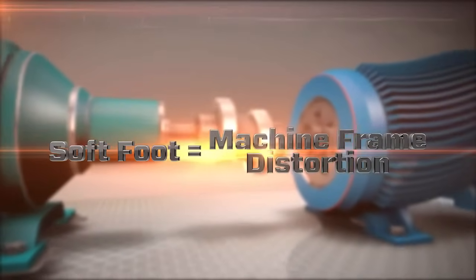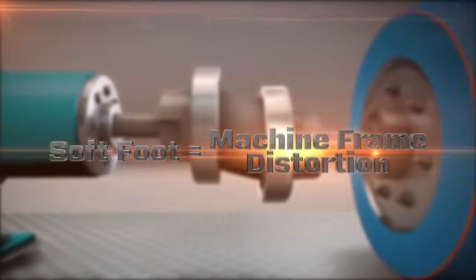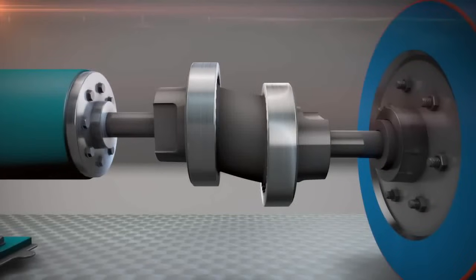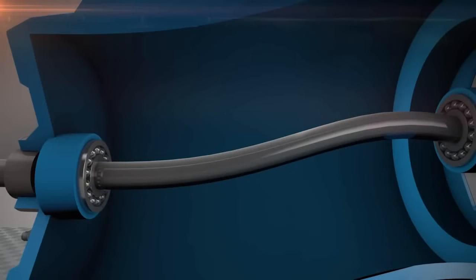Soft foot means machine frame distortion that occurs as the machine's hold down bolts are loosened or tightened. Distortion of the machine frame leads to misalignment at the coupling, internal misalignment of the bearings, increased radial load on the bearings, and a deflected shaft.